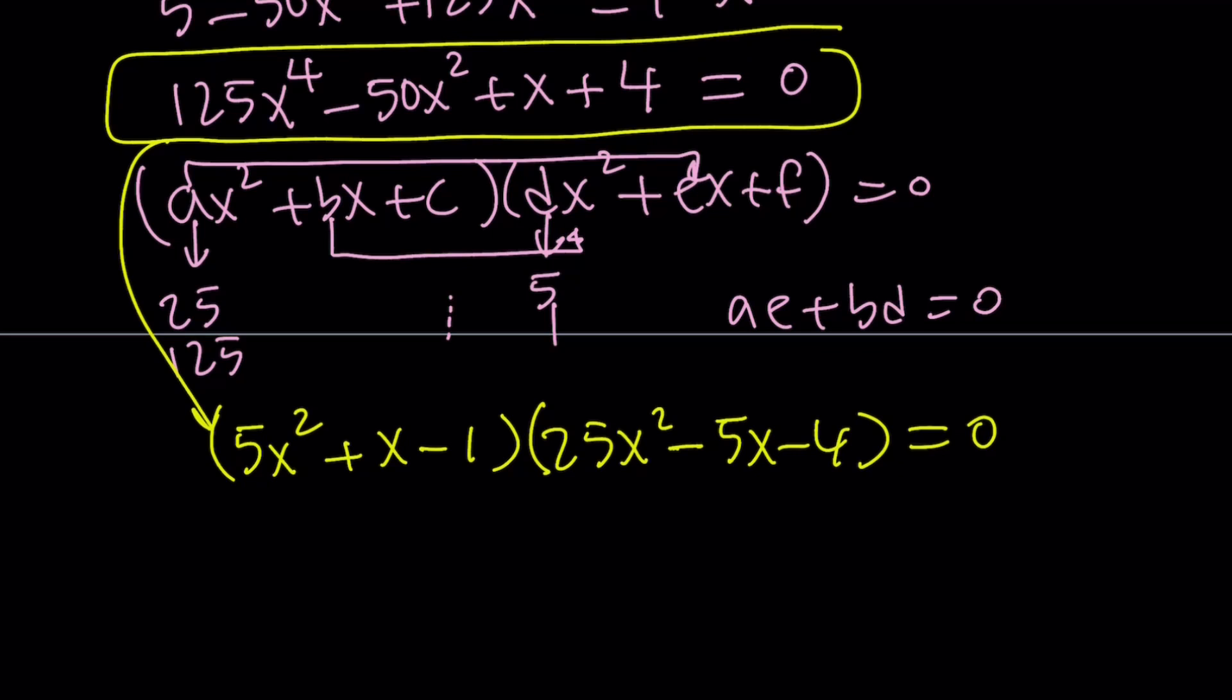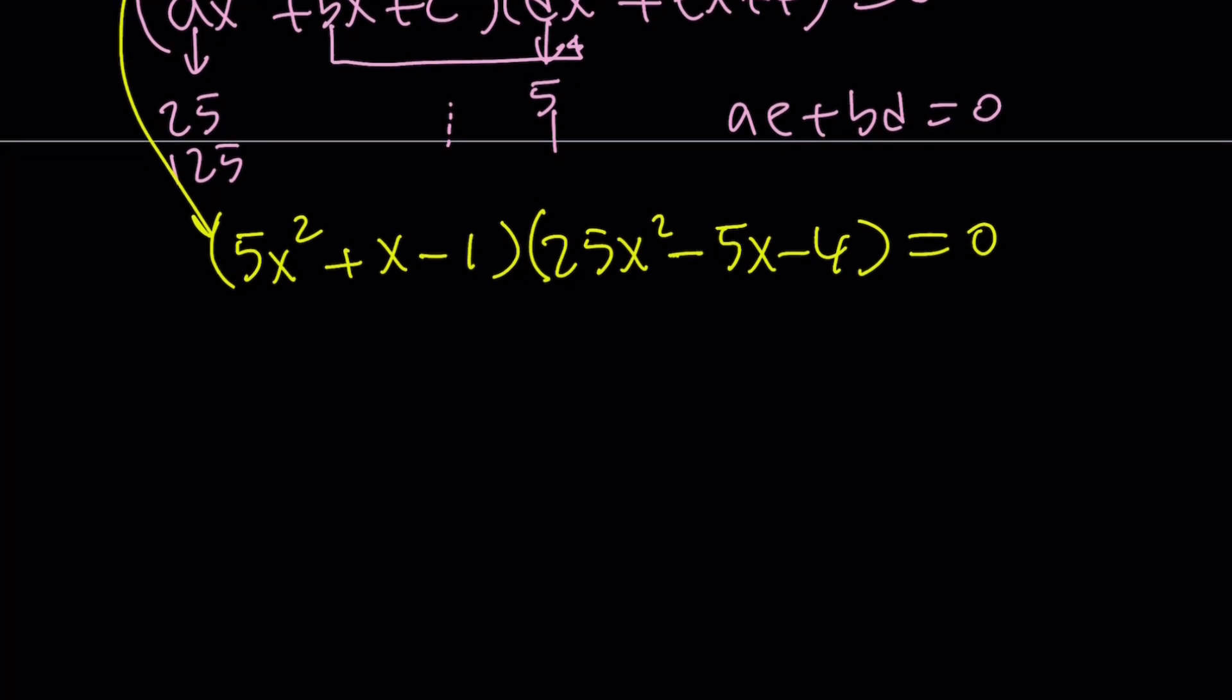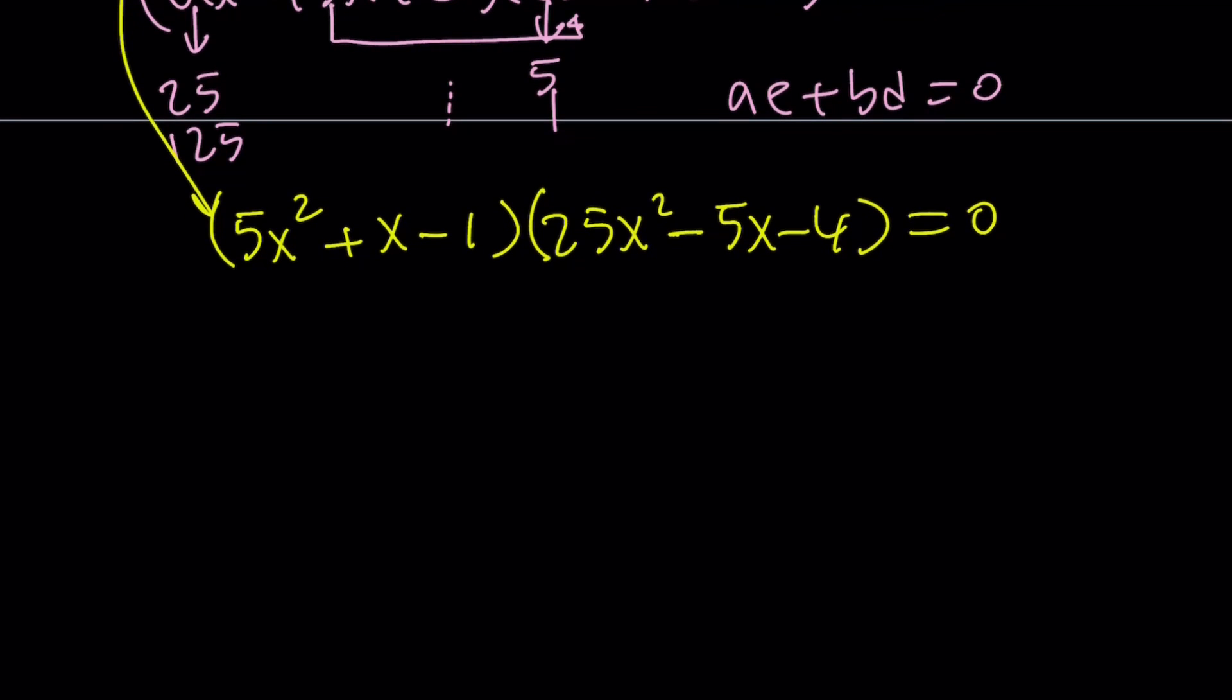This quartic can be written like this, which is nice. And then from here, we can find the solutions very easily. By using the quadratic formula, x is going to be 1 plus minus the square root of 17 over 10, and x equals negative 1 plus minus square root of 21 over 10. Of course, I simplified it. In the second one, you would be getting 5, but then we divide both sides by 5, and then we get a simpler expression.